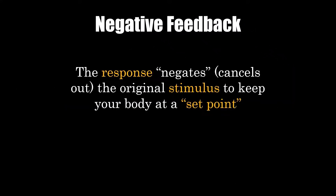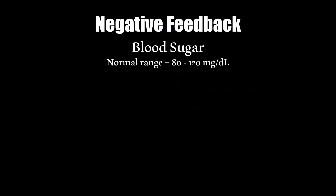Negative feedback is called negative feedback because the response negates the original stimulus to keep your body at a predetermined set point. For example, your blood sugar stays within a range of 80 to 120 milligrams per deciliter — that is your set point.